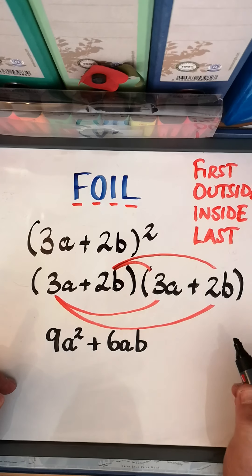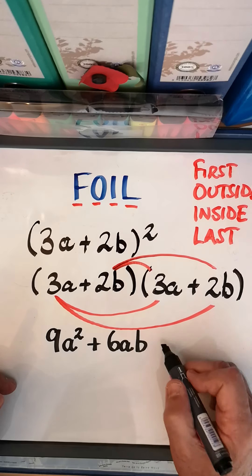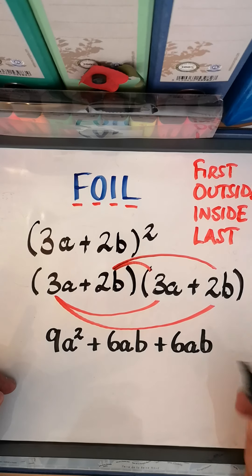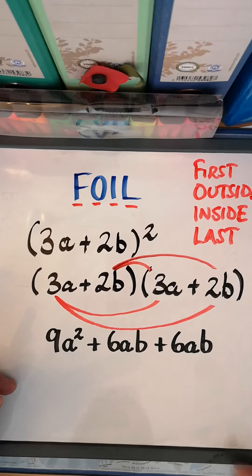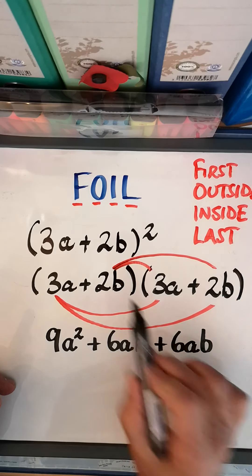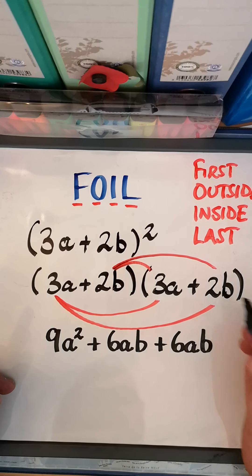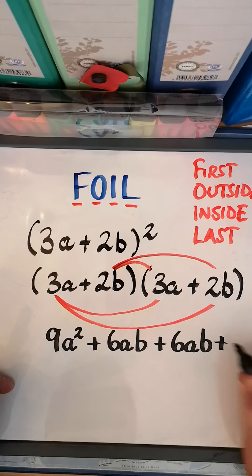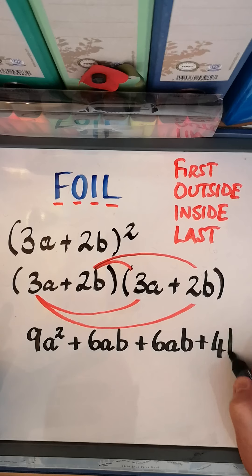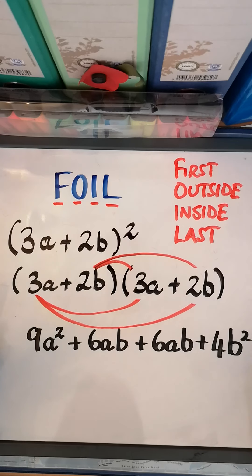Done the outside. Now the inside - we've got positive 2b multiplied by 3a, so yes, same as that, it's 6ab. And then the last two to be multiplied is 2b times 2b, and that is 2 times 2 is 4, and b times b which is b².